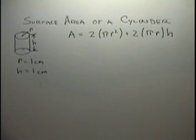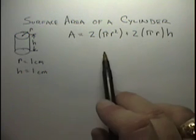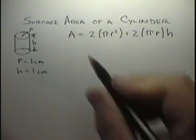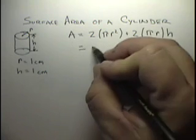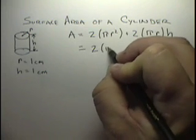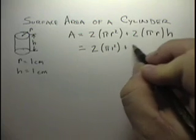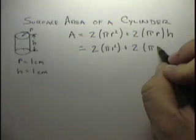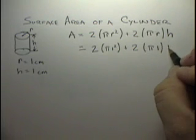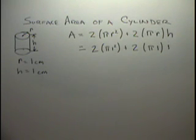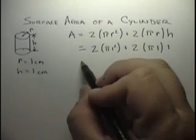Now, all we have to do is plug these values into the equation. Come up here, and put 2 times pi 1 squared plus 2 times pi times 1 times 1. And now we reduce this and solve.